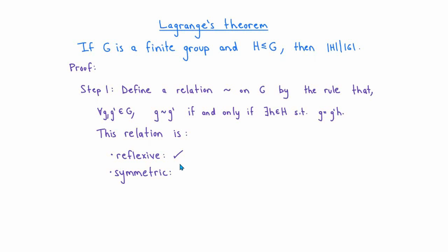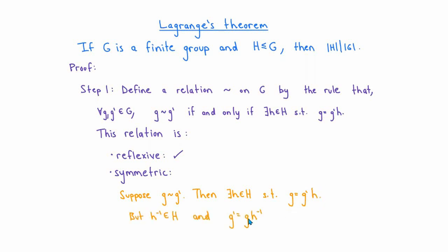Next, we want to show that this relation is symmetric. Suppose g and g' are two elements of G with g related to g'. By definition, there exists h in H such that g equals g' times h. What we want to show is that g' is related to g. Multiplying both sides on the right by h inverse, we get g' equals g times h inverse. Since H is a group and h is in H, h inverse is also in H. So by definition, g' is related to g, establishing symmetry.